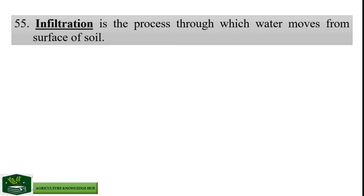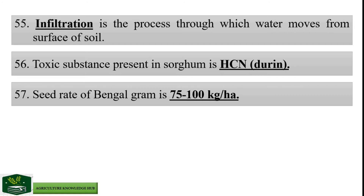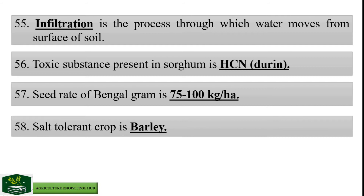Infiltration is the process through which water moves from the surface of soil. Toxic substance present in sorghum is dhurrin. Seed rate of Bengal gram is 75 to 100 kg per hectare. Salt tolerant crop is barley. Toxic substance present in castor is ricinoleic acid.